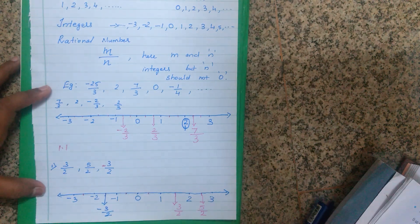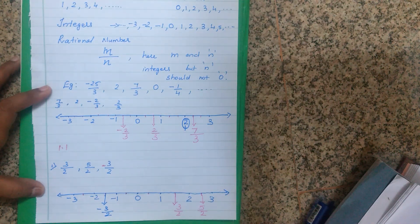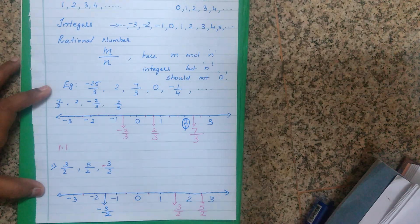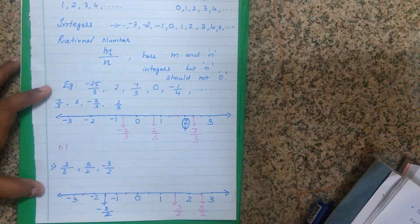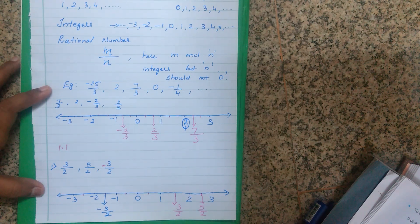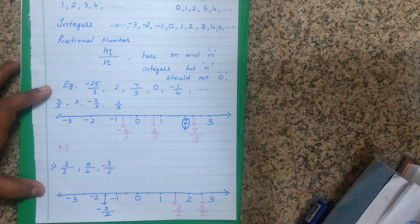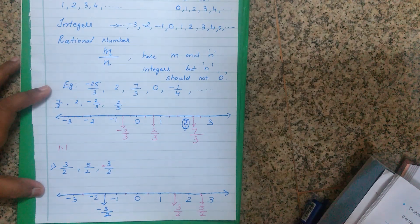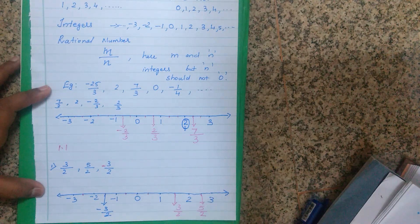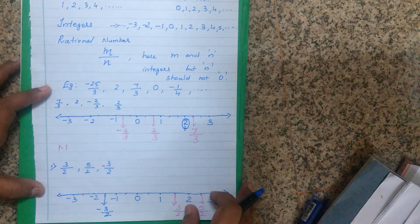There are 3 more sums in your exercise. The second one has denominator 5, so divide each unit into 5 equal parts — that means 4 points per unit. Positive numbers on the right, negative on the left. The third question has denominator 8, so divide 0 to 1 into 8 equal parts — 7 points. The next one has denominator 10 — divide into 10 equal parts, putting 9 points.